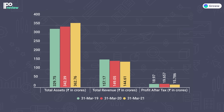Now let's talk about the financials. This table shows the company's financials, with all figures in crores. Total assets were 342.39 crores in FY20, which increased to 362.76 crores in FY21. Total revenue was 149.05 crores in FY20, which slightly declined to 144.61 crores in FY21. Profit after tax also saw a decline over the same period.